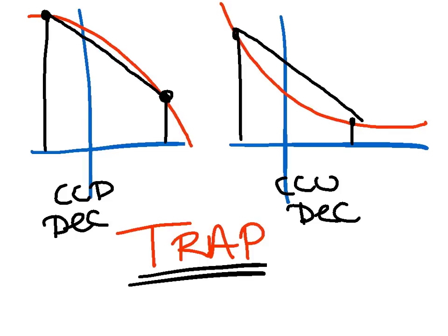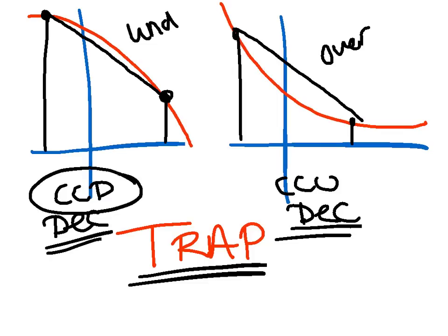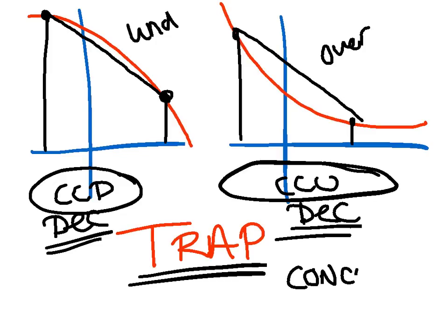Now the trapezoid is the one case where notice the decreasing part did not matter. This time the concavity mattered. Unlike the rectangles, the trapezoid is a little different. This one does rely on the concavity, whereas the rectangles strictly relied on the increasing and decreasing. But again, if you just sketch it out, I think it'll be pretty obvious.